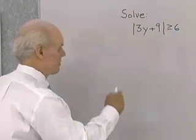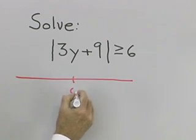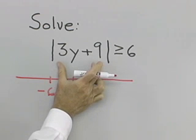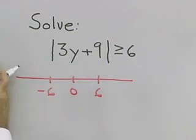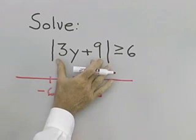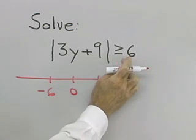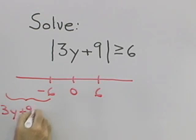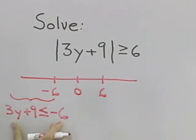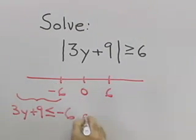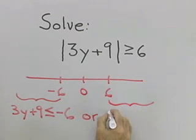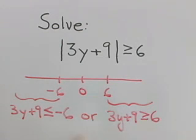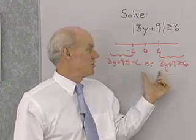I'll draw a number line with 0, negative 6, and positive 6. The expression 3y plus 9 can be found below negative 6 or above positive 6, because its distance from 0 has to be greater than or equal to 6 units. So 3y plus 9 is less than or equal to negative 6, or 3y plus 9 is greater than or equal to positive 6.